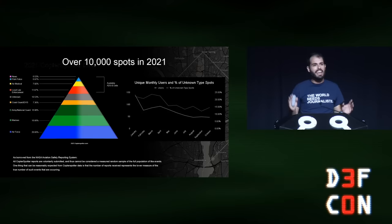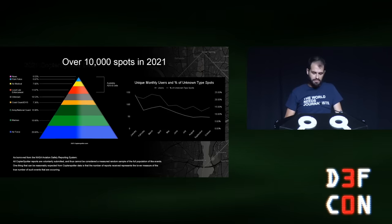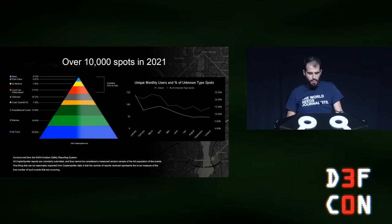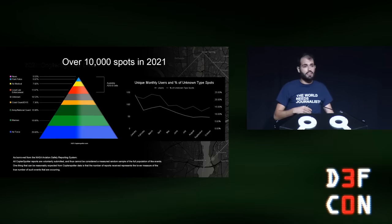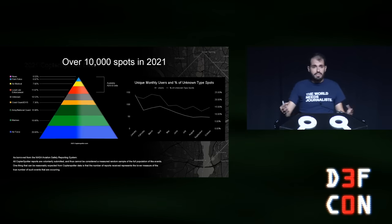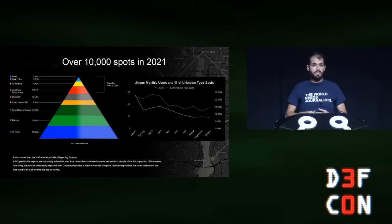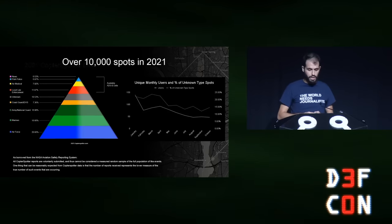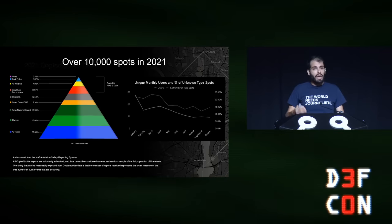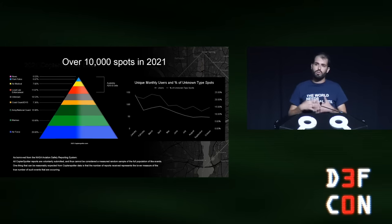We collected over 10,000 CopterSpots in 2021. At the top, you can see the small portion that would normally be available with ADS-B data. The gray area is the unknowns after we looked at photos and tried to correlate operators. Fifty percent of our data is military operators. We do acknowledge a shortcoming: the spots are voluntarily submitted, so they do not represent a measured random sample. However, you can reasonably expect the actual number of events is higher than what's reported. We did notice a drop-off over several months — unique users and unknown spots were going down, meaning people were getting better at identifying helicopters but we were serving more of a core group of spotters.